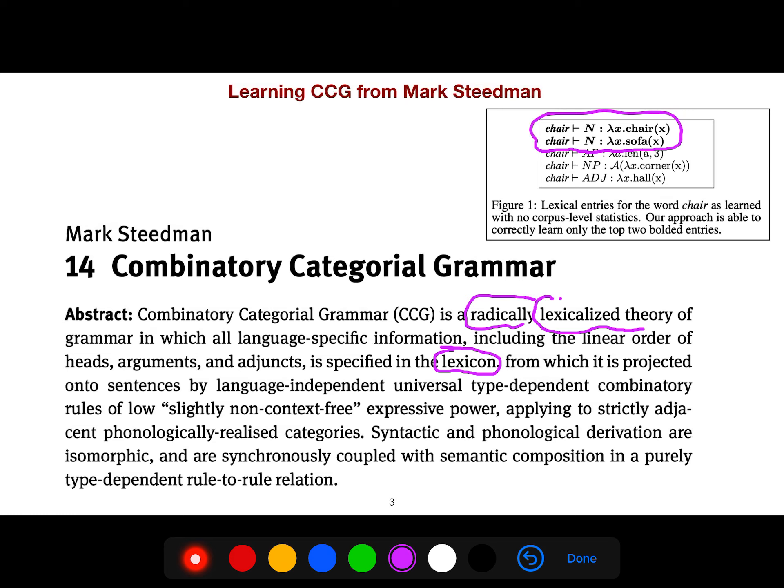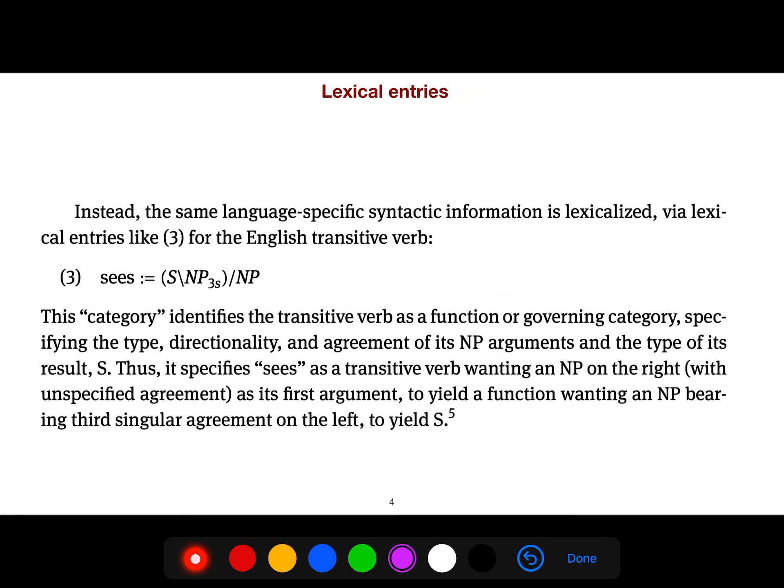Still, ambiguities will arise because there are different ways to parse to reach a given logical form. Instead, the same language-specific syntactic information is lexicalized via lexical entries. For example, the verb sees means that it needs an NP on the right, but it needs an NP3S on the left of that. These slashes and backslashes mean this. A slash means we need something on the right, while backslash means we need something on the left.